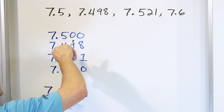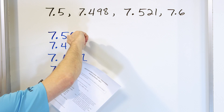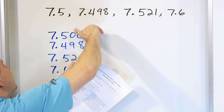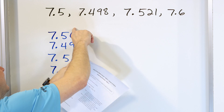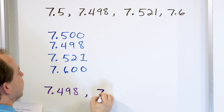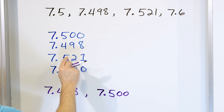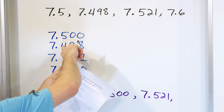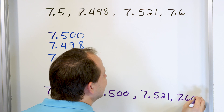Now we need to find the next largest number. After the 4, we have two numbers tied with a 5 in the tenths place, so we look at the next digit. One has a zero and the other has a two. Zero is smaller, so the next number is 7.500. Then the next biggest is 7.521. Now that we've exhausted three numbers, the only one left has a 6 in the tenths place — 7.600 — and that's the largest number.